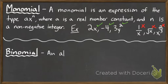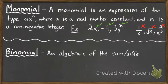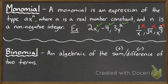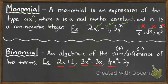A binomial is an algebraic expression that is the sum or difference of two terms. So if you take two monomials and combine them with addition or subtraction, that is a binomial. For example, 2x plus 1 is a binomial — two terms being added. 3x squared minus 3x is a binomial — two terms being subtracted. And a quarter times x squared plus 2y is also an example of a binomial.